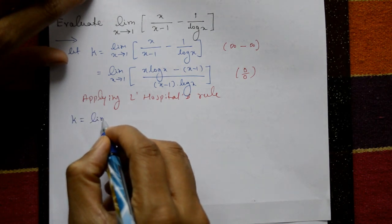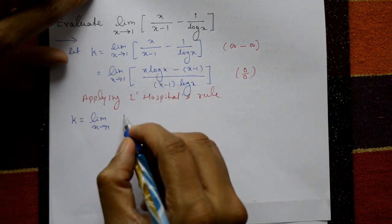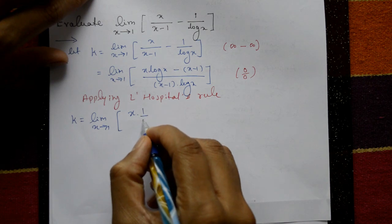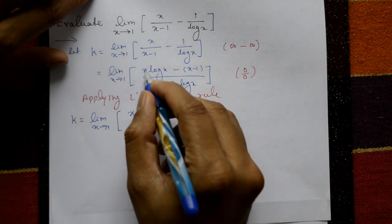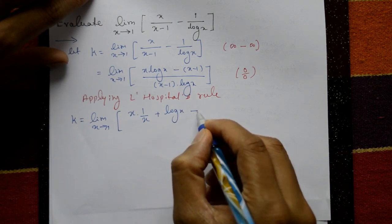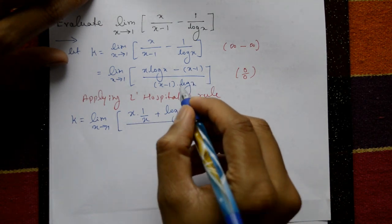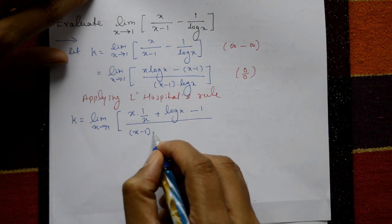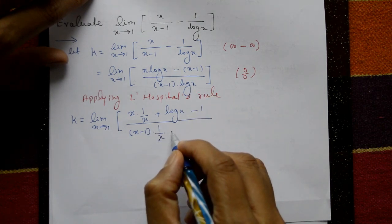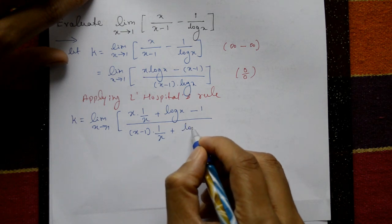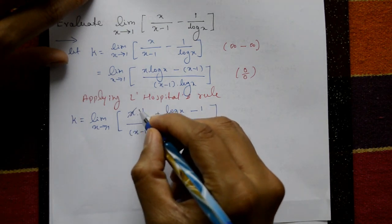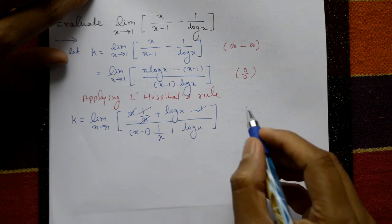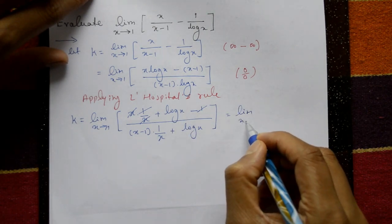Applying L'Hôpital's rule, differentiate the numerator: using product rule on x·log x gives (1/x)·x + log x = 1 + log x, minus the derivative of (x-1) which is 1, giving log x. For the denominator, using product rule on (x-1)·log x gives log x + (x-1)/x. Simplifying: numerator is log x, denominator terms partially cancel.